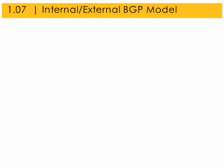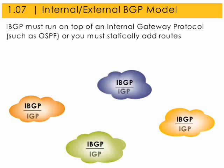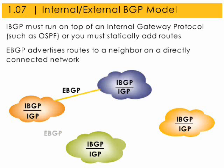A few important points about the internal/external BGP model: iBGP runs within an autonomous system and must run on top of an interior gateway protocol such as OSPF, or you must statically add routes to the routing table of each router within the autonomous system. eBGP advertises routes to neighbors on a directly connected network, and BGP neighbors must be able to ping each other.